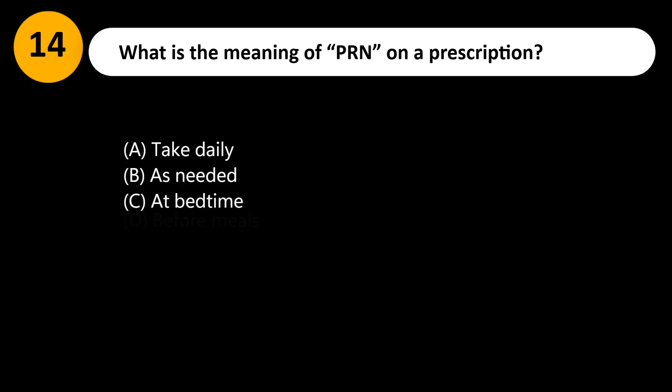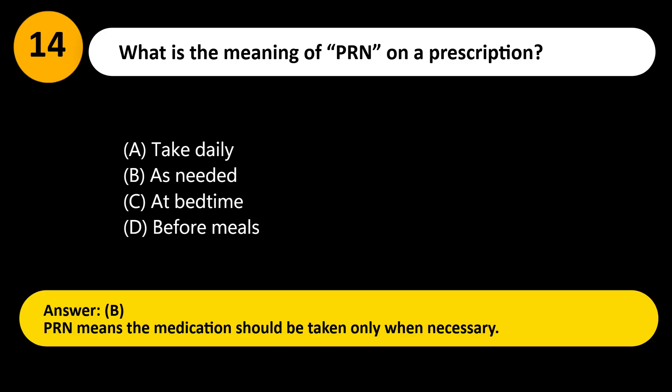What is the meaning of PRN on a prescription? A. Take daily. B. As needed. C. At bedtime. D. Before meals. Answer: B. PRN means the medication should be taken only when necessary.